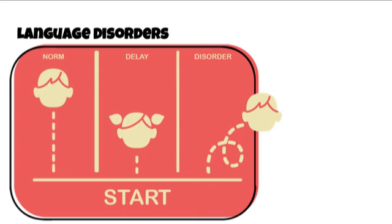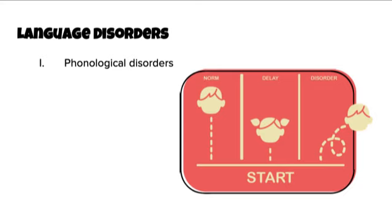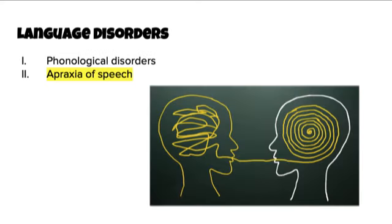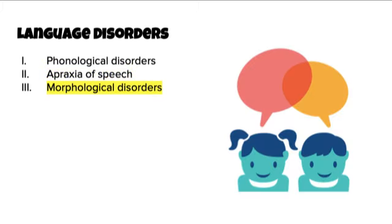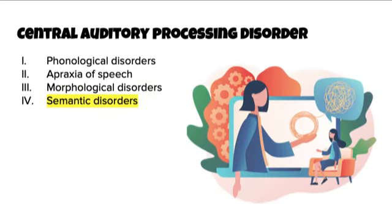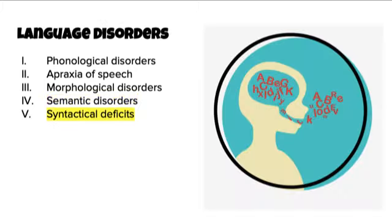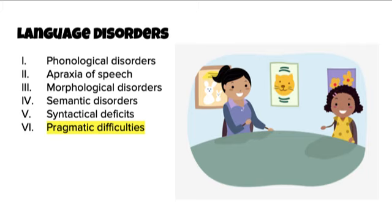With language disorders, we look at six different areas. First, phonological disorders — difficulties organizing speech sounds into recognizable patterns. Second, apraxia of speech — the inability to control the muscles and thoughts that produce speech. Third, morphological disorders — when someone adds morphemes incorrectly to words. Fourth, semantic disorders — poor understanding of word meanings and difficulty finding the correct words to use. Fifth, syntactical deficits — difficulty with word order and sentence structure. And sixth, pragmatic difficulties — problems understanding and using language in different social contexts.